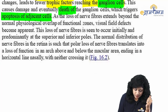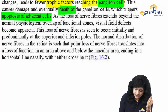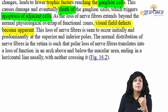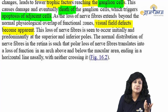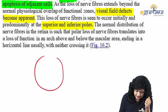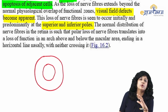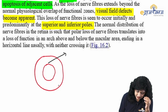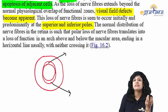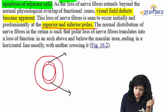As loss of nerve fibers extends beyond normal physiological overlap, visual field defects occur. This loss is seen initially at the superior and inferior poles. As we discussed in class, if this is your optic disc and cup with a normal CD ratio of 0.3 to 0.4, first we have selective loss at the superior and inferior poles. Because of this selective loss, the cup becomes vertically oval — this is called vertically oval cupping.